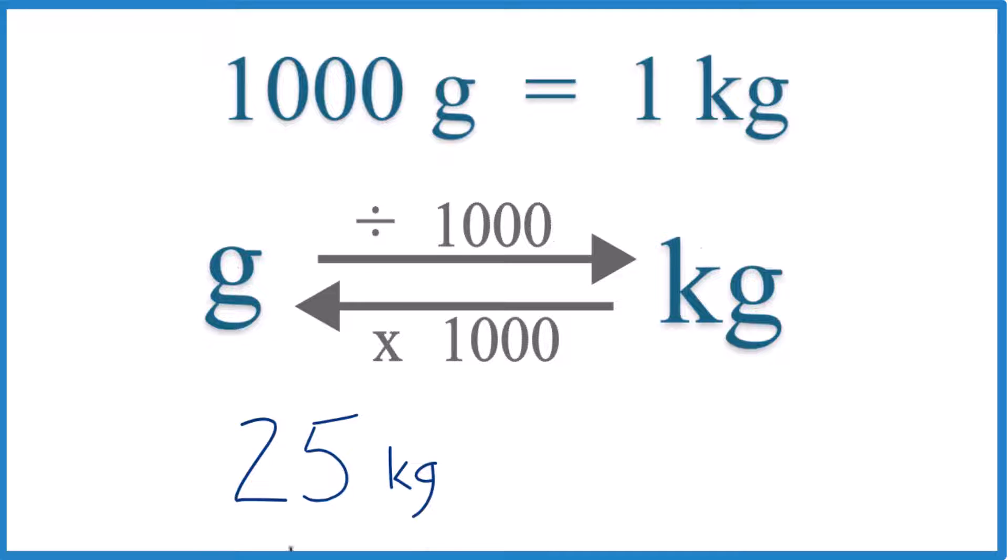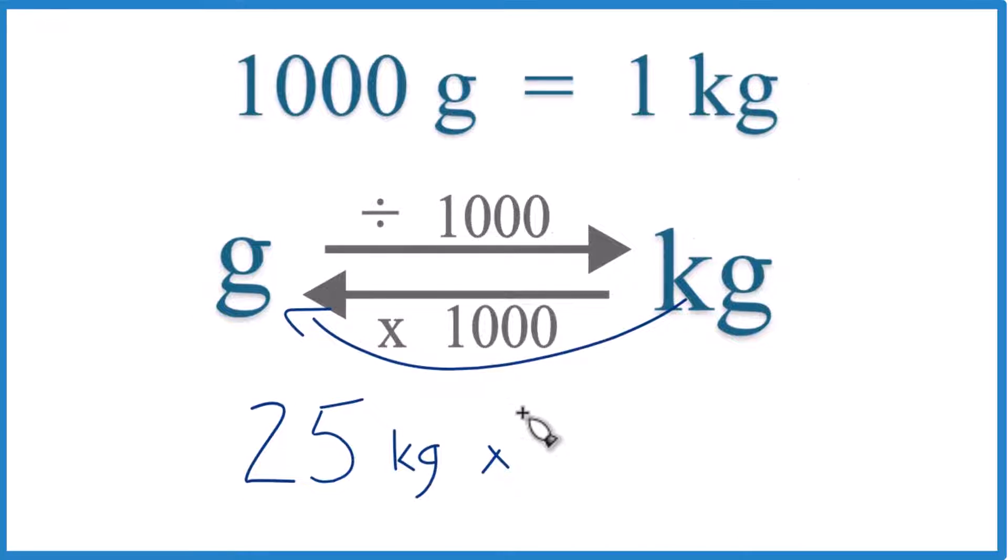In this case, we have 25 kilograms. We want to change that to grams. So we are going to multiply by 1,000, like this.